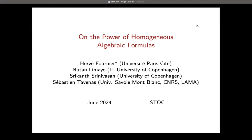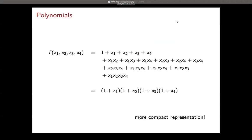We are going to speak about arithmetic circuits and lower bounds. Consider this polynomial. First it's written as the sum of its monomials, and below it's written in a factorized way, which is way more compact.